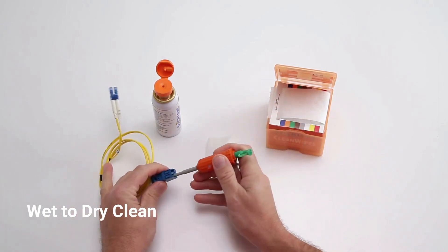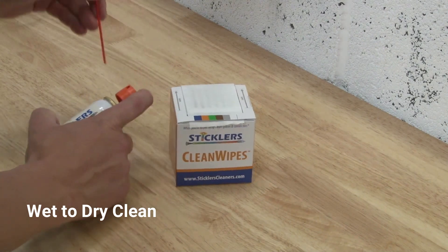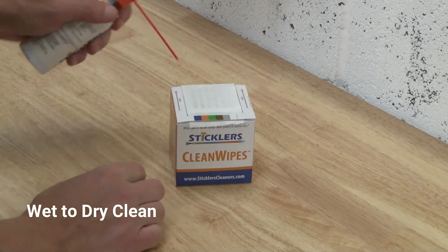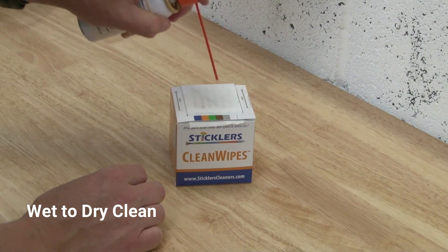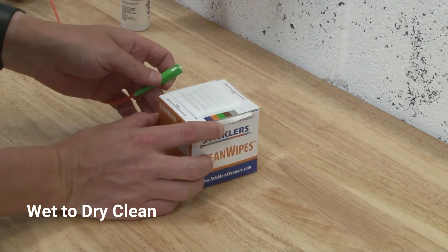To wet to dry clean with a wipe, be sure to use an optical grade wipe like Stickler's Clean Wipes that won't leave lint behind. Wet the wipe with Stickler's fiber optic splice and connector cleaning fluid, then swipe the end face from wet to dry area on the wipe.